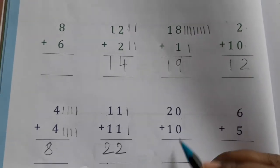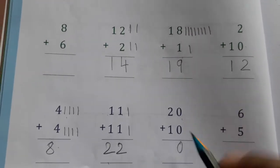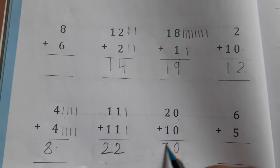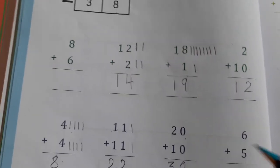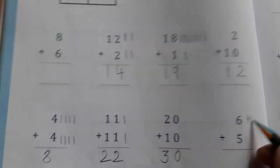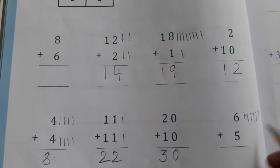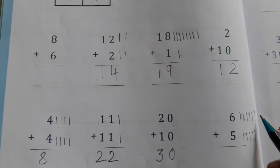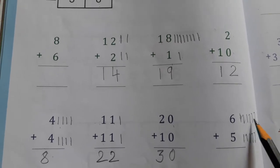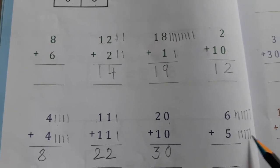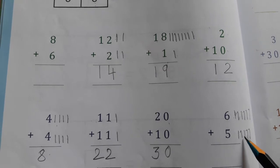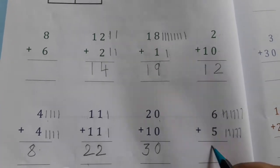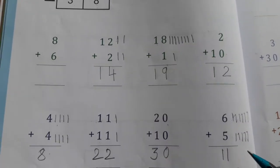0 plus 0, so this 0 will come same. 2 plus 1 equals 3, so 30. Counting: 1, 2, 3, 4, 5, 6. Now count them: 1, 2, 3, 4, 5, 6, 7, 8, 9, 10, 11. Right, here 11.